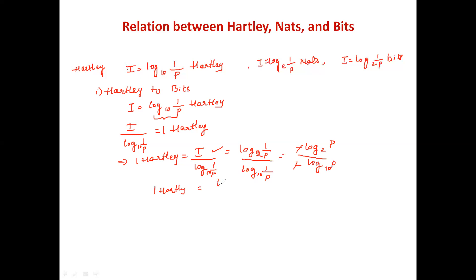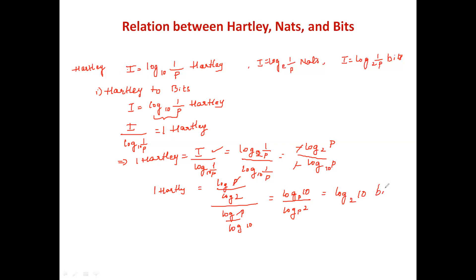Simplifying, we get log p divided by log 2 over log p divided by log 10. The log p terms cancel, leaving log 10 divided by log 2, which can be written as log 10 to base 2 bits. Therefore, 1 hartley = log₂(10) ≈ 3.32 bits.